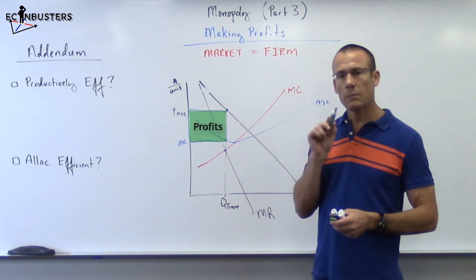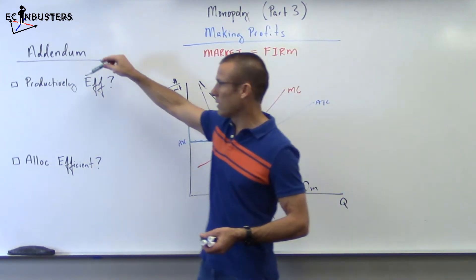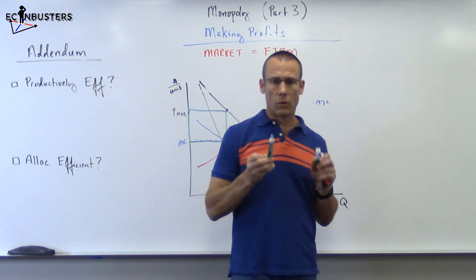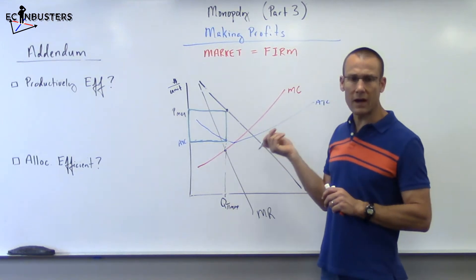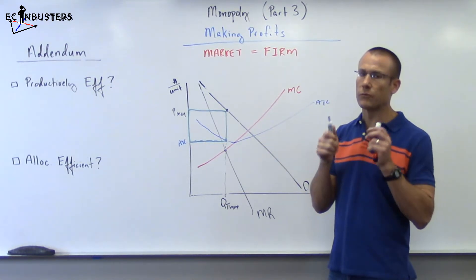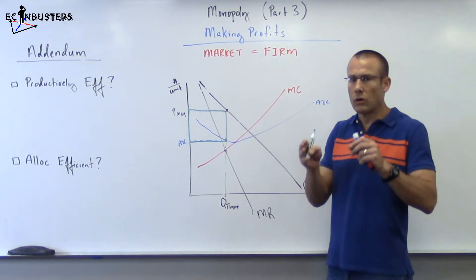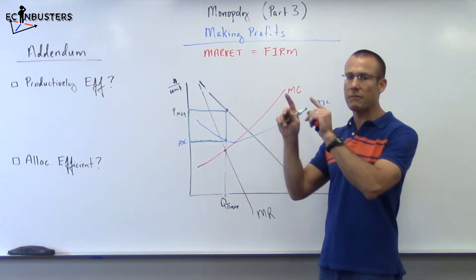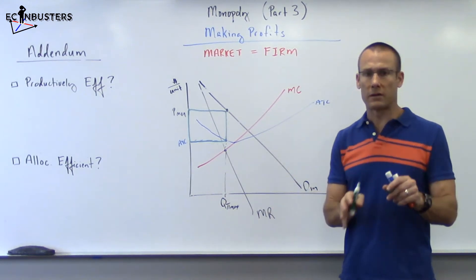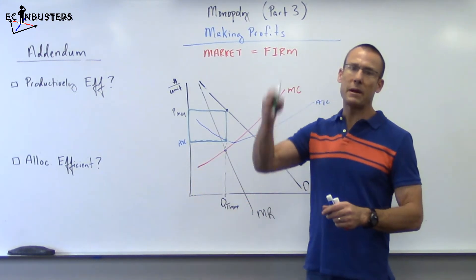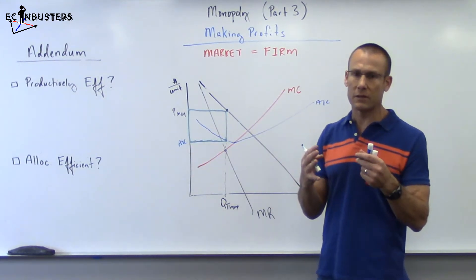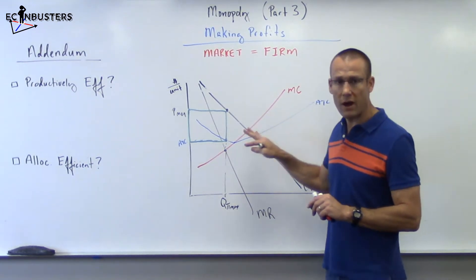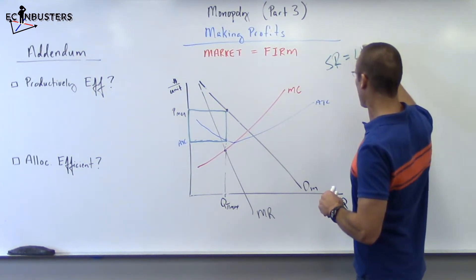So we've conquered our first task — showing a monopoly making profits — using four curves: MC, ATC, demand, and MR. Now for the addendum: when it comes to a monopolist, this is not just the short run. It can also be the long run if we're talking about a pure monopolist. There's no separate short run and long run graph for a pure monopolist. Monopolists can make profits in the long run because they have complete product differentiation, no close substitutes, and barriers to entry are infinite. So this graph is both the short run and the long run graph.